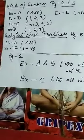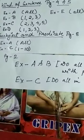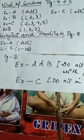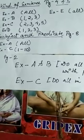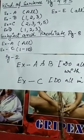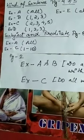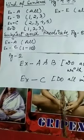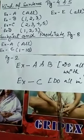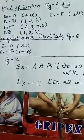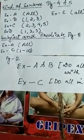Now come to page number 8 — that is subject and predicate. Exercise A: all. Exercise B: 1, 2, 3. Exercise C: 1, 2, 10.